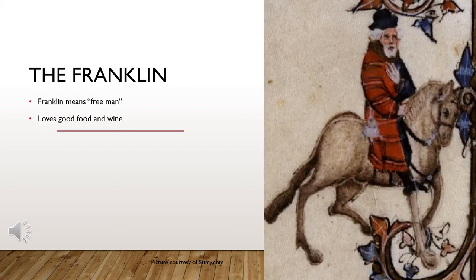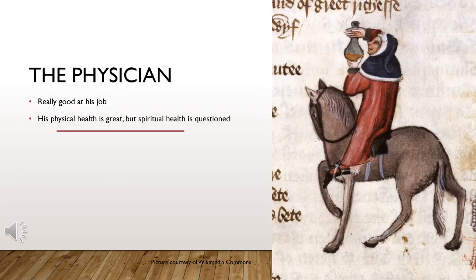Franklin actually means 'free man' in Chaucer's time, and he's in a kind of weird place — he's near nobility but doesn't work for the nobility. He really likes food and wine and always has his table ready for a feast. The Physician is obviously a doctor, super good at what he does and in great physical shape, but the narrator thinks he may be a little too preoccupied with money to be in spiritual good shape.